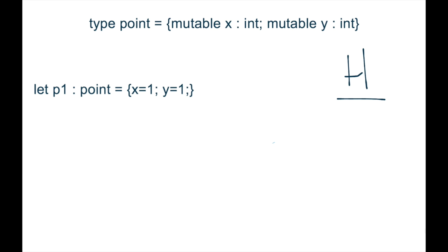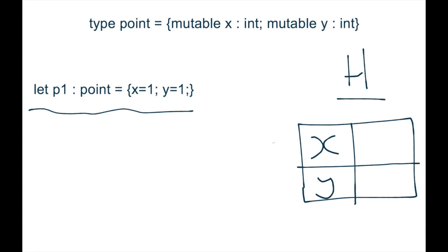So somewhere on the heap, we will have a double entry cell. So you have one row for each of the fields. So in this case, we have an X field and a Y field.